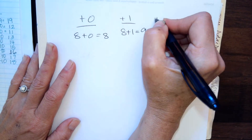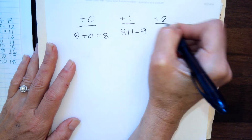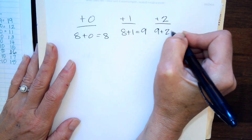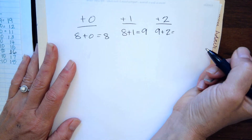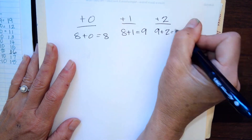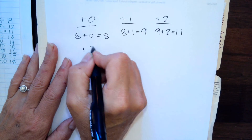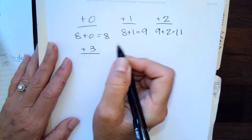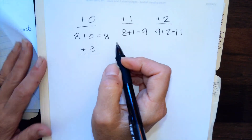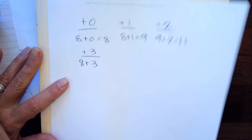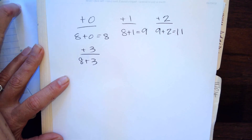Up two: nine plus two, we go up to ten and then eleven. Up three, we just count up three. So eight plus three, we go nine, ten, eleven.